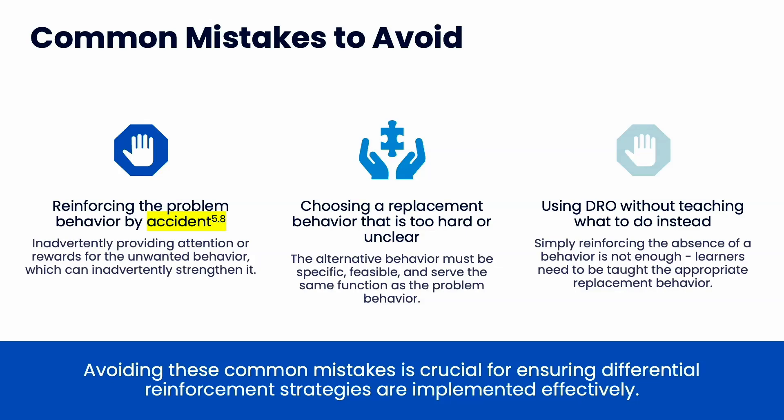Another mistake is choosing a replacement behavior that's too hard or unclear — it has to be feasible, especially based on age. I see people choose complicated behaviors for young children and it doesn't usually work. Simple is always better. Also, using DRO without teaching what to do instead — just because we use DRO, we should still explain options they can do instead, giving them multiple options. For example, 'we're not going to yell during independent work period, but here's what you can do' — give them other activities to keep them engaged during that period.